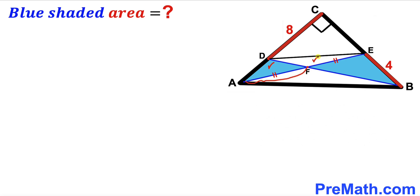Now let's make an observation. We can see the base of triangle AFD is AF, and the base of triangle EFD is EF — both are congruent. Furthermore, the height of triangle AFD is DP, and likewise the height of triangle EFD is DP as well.